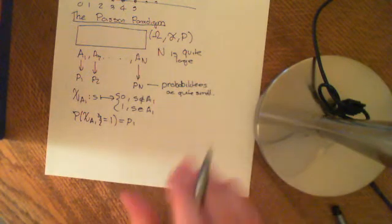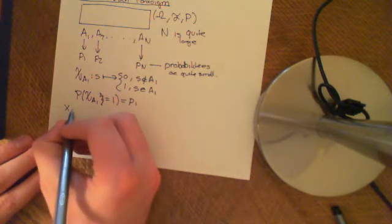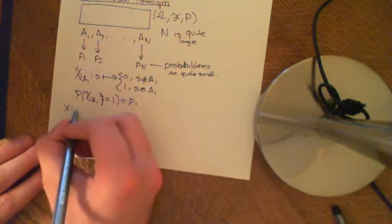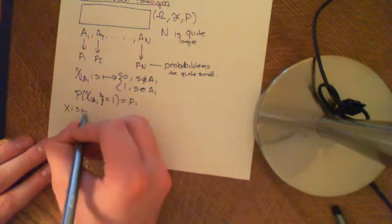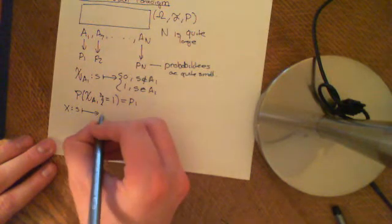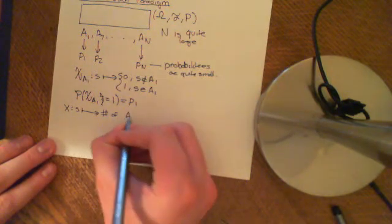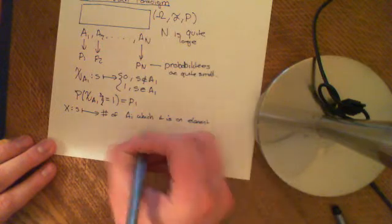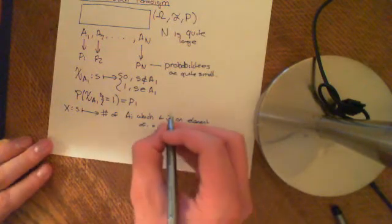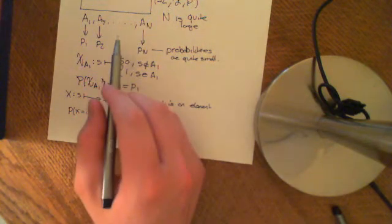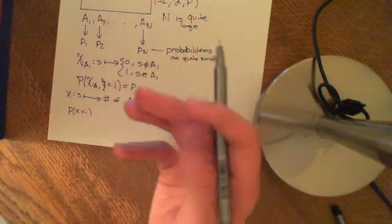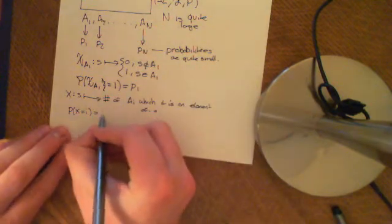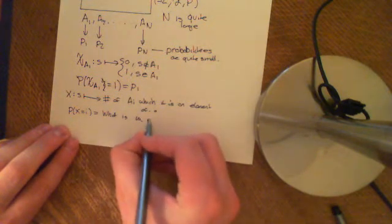We can set up indicator random variables for each of these. And basically, what we can ask is: let's make a new random variable X, which maps any S onto the number of events A_i which it is an element of. We want to know what is the probability that X equals i — what's the probability that i of these events happen, that i of them actually come true.